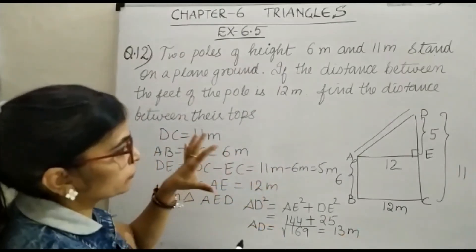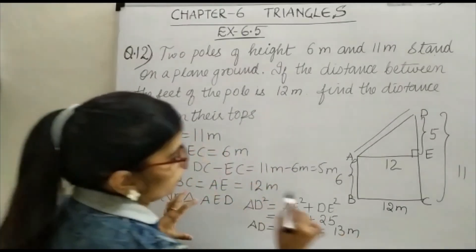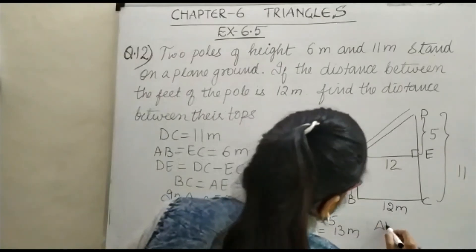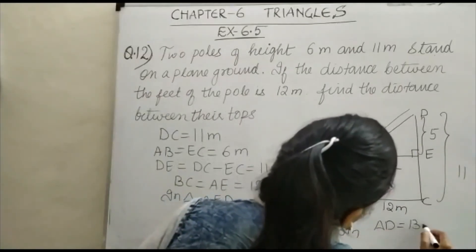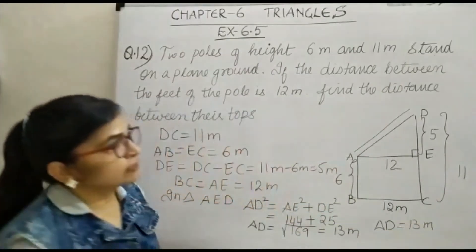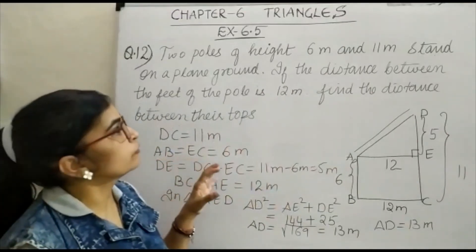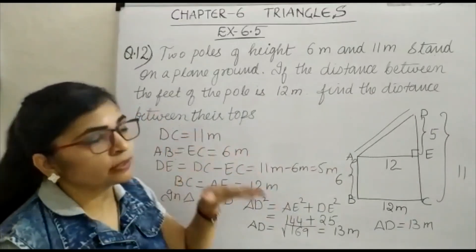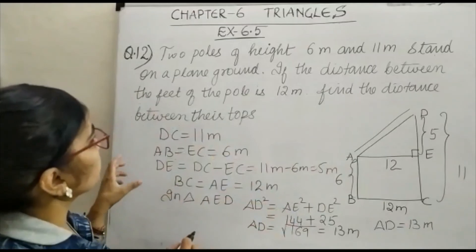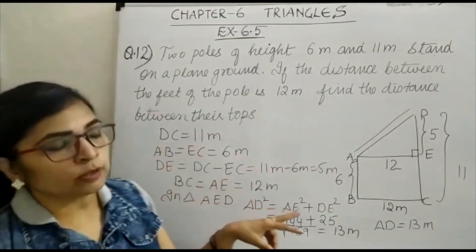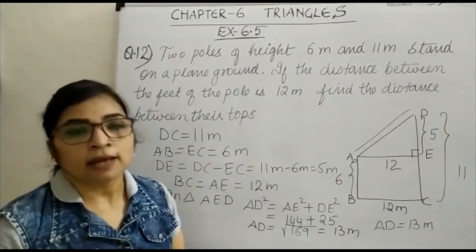So what is the length of their top or the distance between their tops? That is AD is equal to 13 meter. So this is how we have worked out for the two poles which are standing on the level ground and the distance between their tops is equal to 13 meter. Thank you.